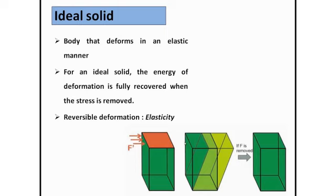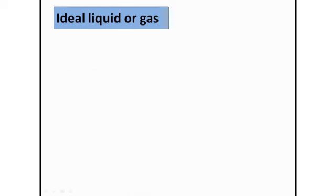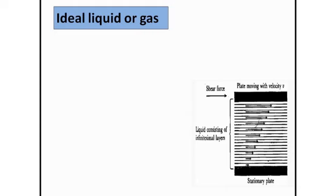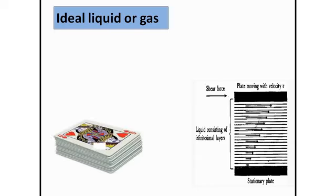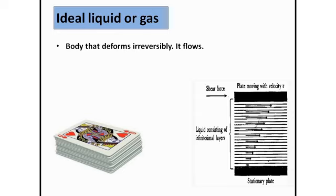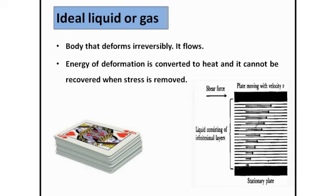Just like the ideal solid, there must be ideal liquid or gases. What happens in the case of ideal liquid or gas? According to the definition, ideal liquids deform irreversibly, meaning they do not need to come back to their original position. If we apply energy, the liquid should flow. The energy of deformation is converted to heat in the case of ideal liquid or gas, and it cannot be recovered when stress is removed.